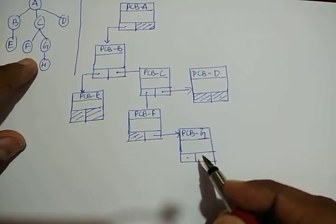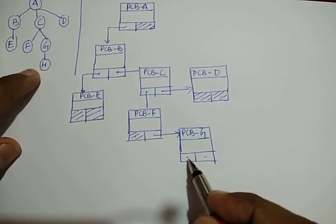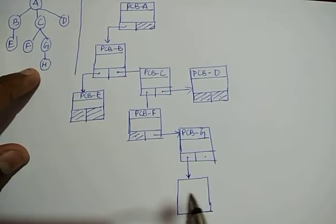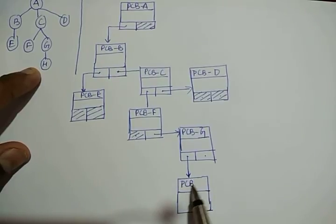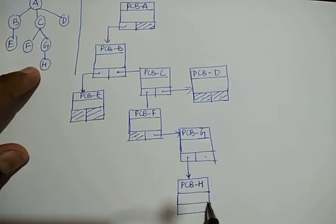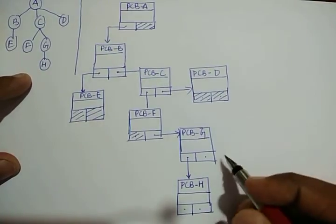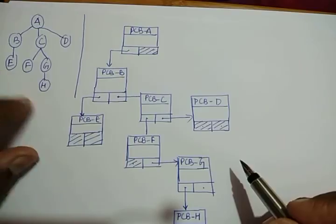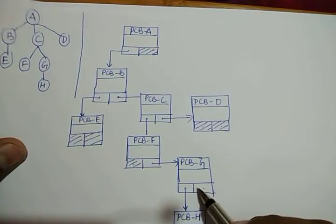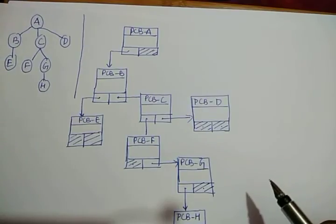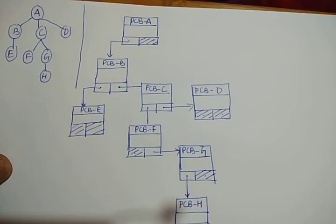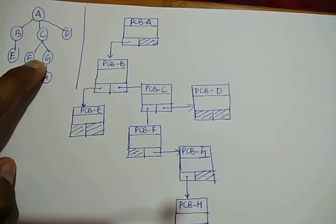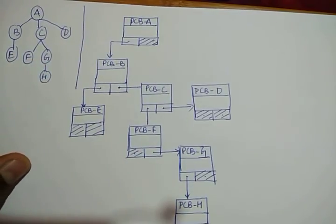Now come to G: does G have any child? Yes, H. So it will be connected to the PCB of H, which has two address parts. The parent of G is C; does C have any further child apart from F and G? No, so it will denote null. Now come to H: does H have any child? No, so it will be null. Does H's parent G have any further child? No, so that will also denote null.